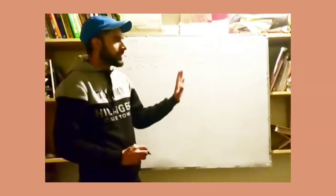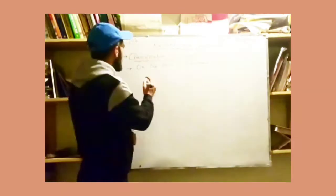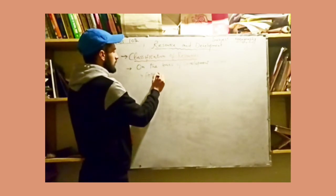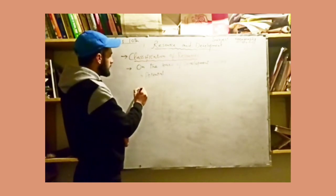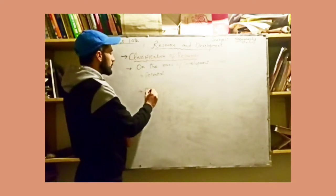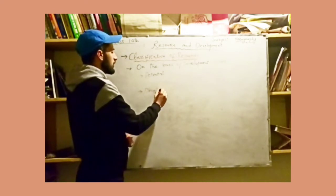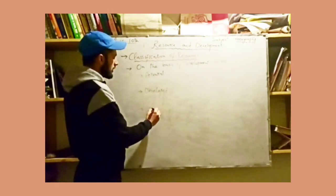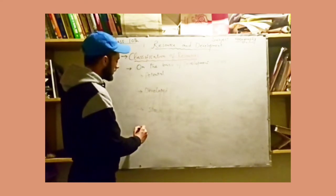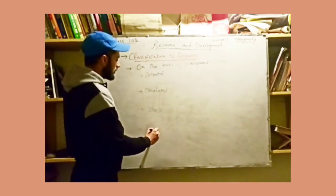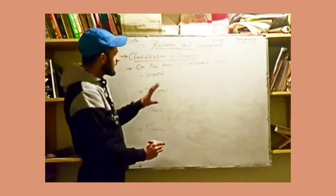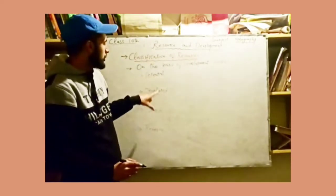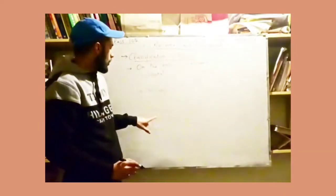We will classify resources into four types on the basis of level of development. Number one is potential resources. Number two is developed resources. Number three is stock. And number four is reserve.